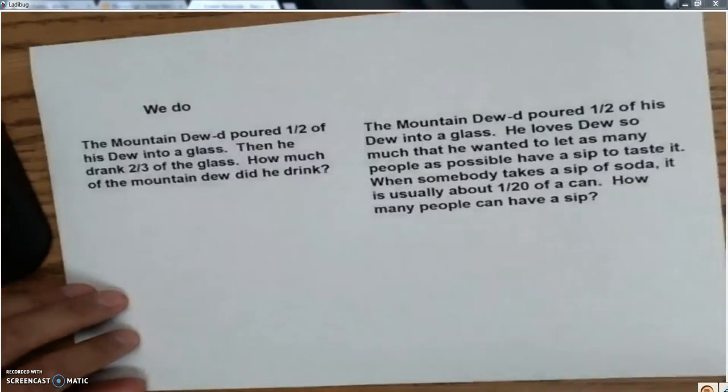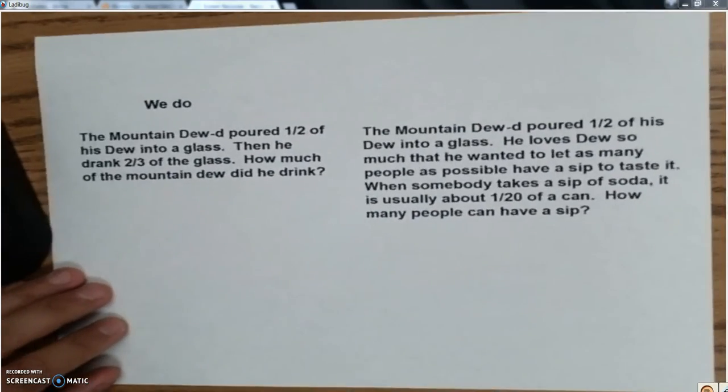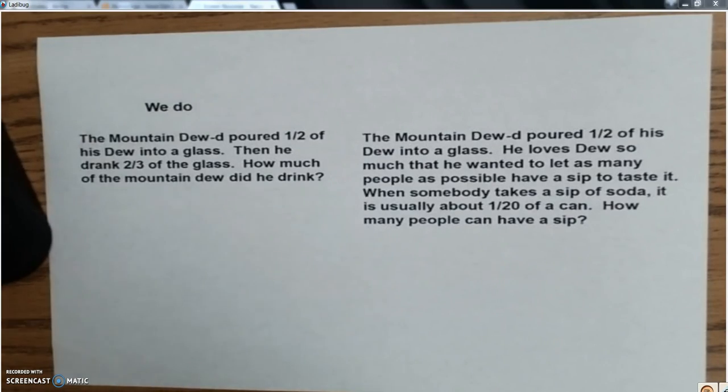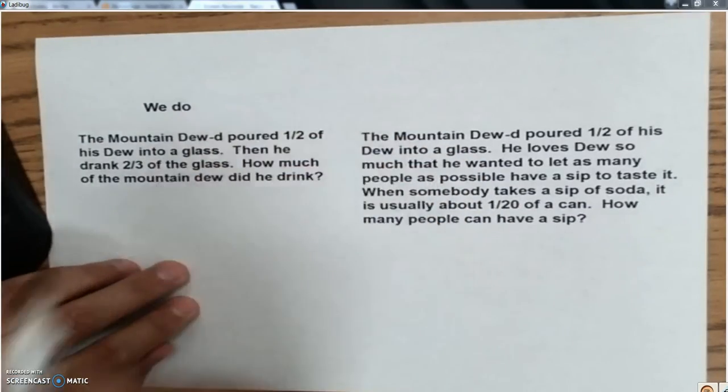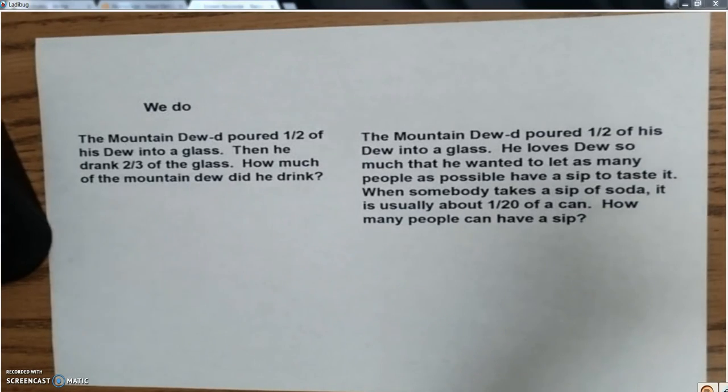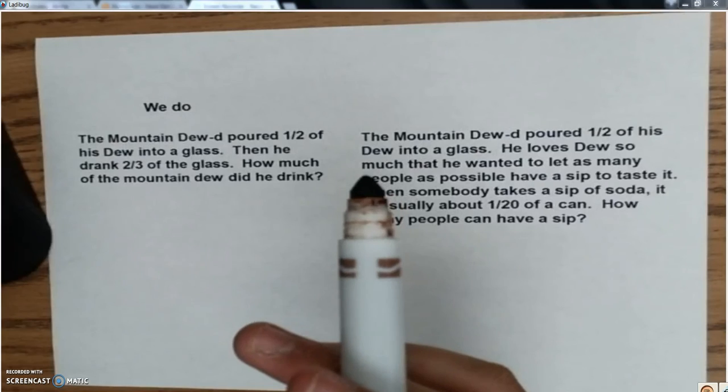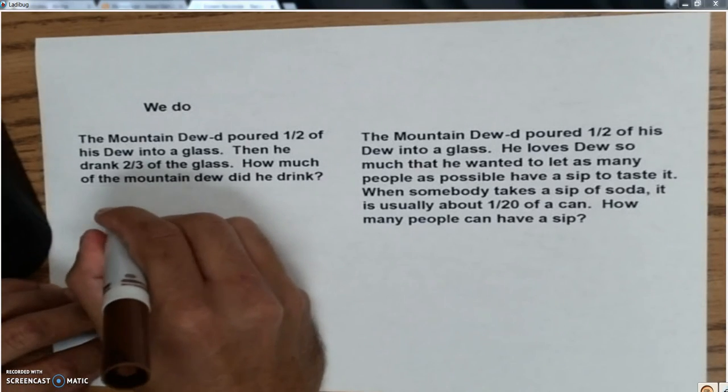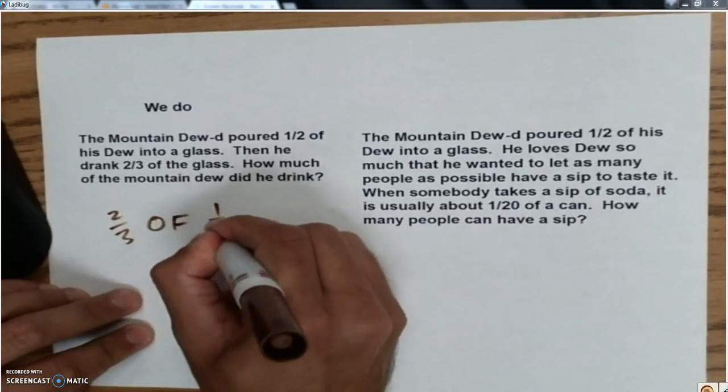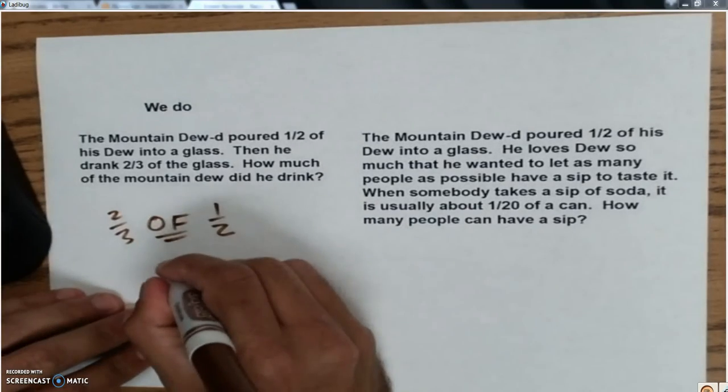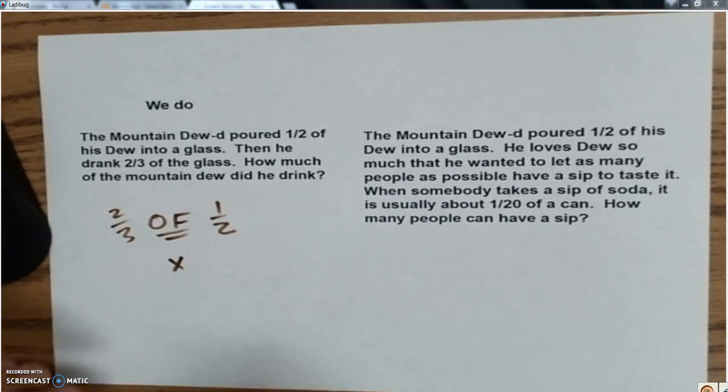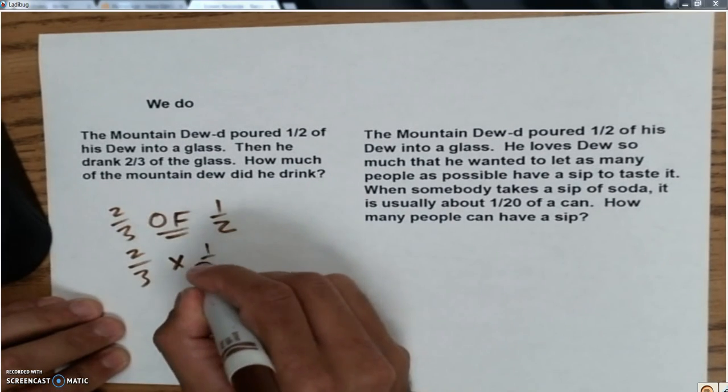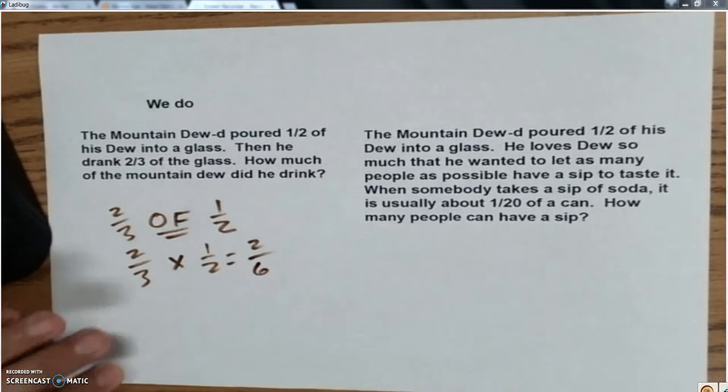Alright, let's do two together. So open up, and let's talk about 1/2 and 2/3. This is our Mountain Dew guy. The Mountain Dew'd, see what I did there? The Mountain Dew'd poured half of his dew into a glass. Then he drank 2/3 of the glass. How much of the Mountain Dew did he drink? So he drank 2/3 of the 1/2 he poured. And if I can word it that way, I'm going to multiply. 2/3 times a half. And you'll remember this answer is probably he drank 2/6 of the dew.